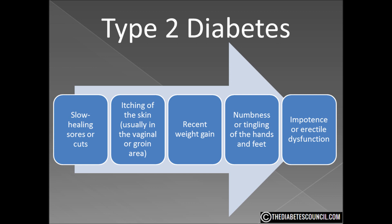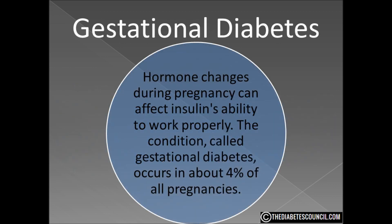A quick word about gestational diabetes. Hormone changes during pregnancy can affect insulin's ability to work properly. The condition called gestational diabetes occurs in about 4% of all pregnancies. It is tested for during the pregnancy and treated if present. Usually blood sugars return to normal after about 6 weeks of giving birth.